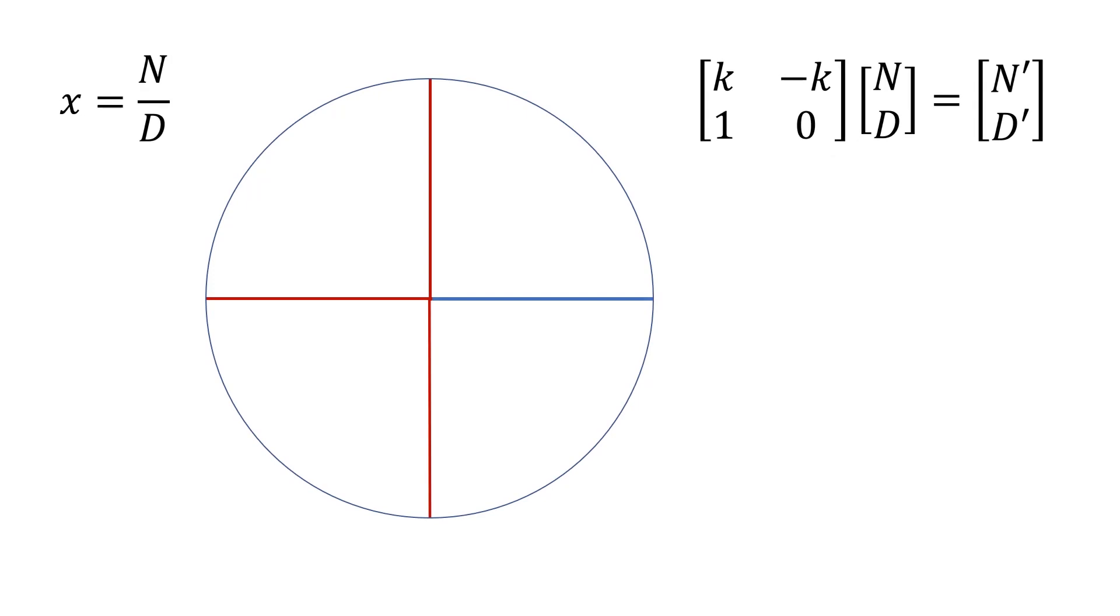With that in mind, it makes much more sense to ask, is k minus k over x a rotation of the vector n d by 2π over n? For example, if n was 4, this linear transformation might amount to a rotation by 2π over 4.